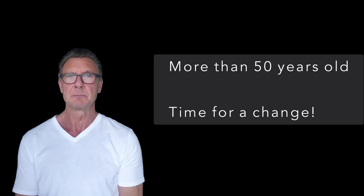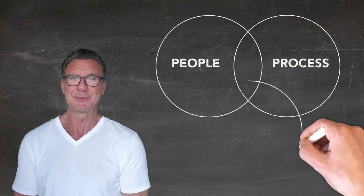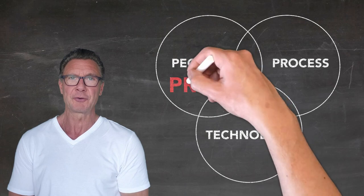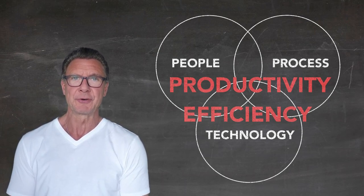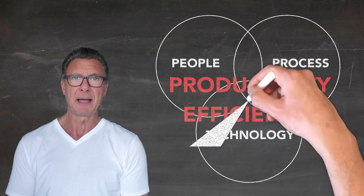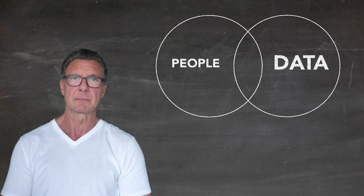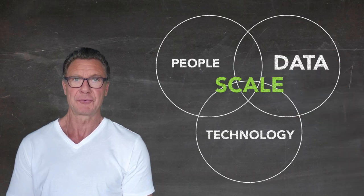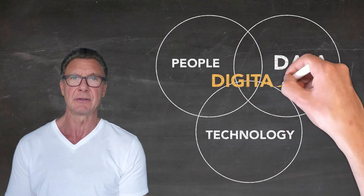For now, I'm going to share two frameworks. The first one you have probably heard of: people, process, and technology. It has been around since the 1960s — more than 50 years old. It forms the basis of what I call the analog operating model, as it was designed for the analog world and focuses on productivity and efficiency by removing friction. We've already established that there is no friction in the digital world, so this model and mindset is not going to work. But if we replace process with data, everything changes. We shift the focus from efficiency and productivity to scale and automation, and create the foundation for the digital operating model.